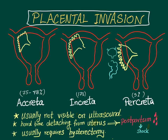Medicosis Perfectionalis presents placental invasions. There are three types of placental invasion. The first and most common is called placenta accreta — an abnormally adhered placenta to the superficial uterine wall. It accounts for 75 to 78 percent of all cases of placental invasion.